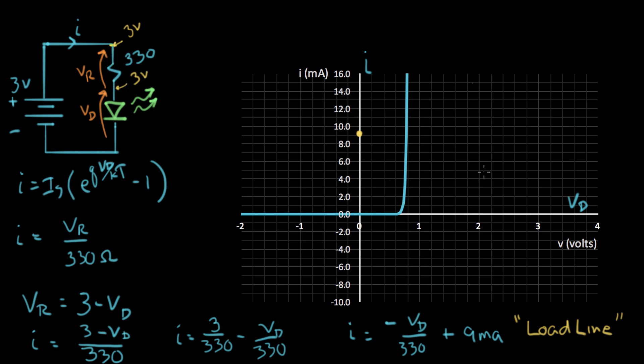So let's go over and put that point on our line. So when I is zero, V is three volts. So there's another point on the line. And now we have two points and we can draw a line between them. Like that.